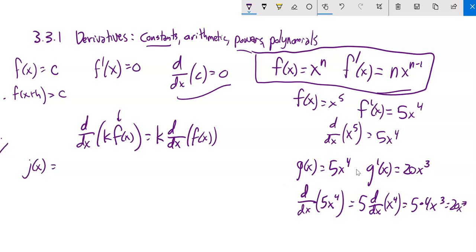In practice, you probably just bring down the four and go, oh, five times four is 20, and then reduce that exponent by one. Here's the other thing this does for me with the addition subtraction. Let's say that j of x is 7x cubed minus 3x squared plus x minus 9.